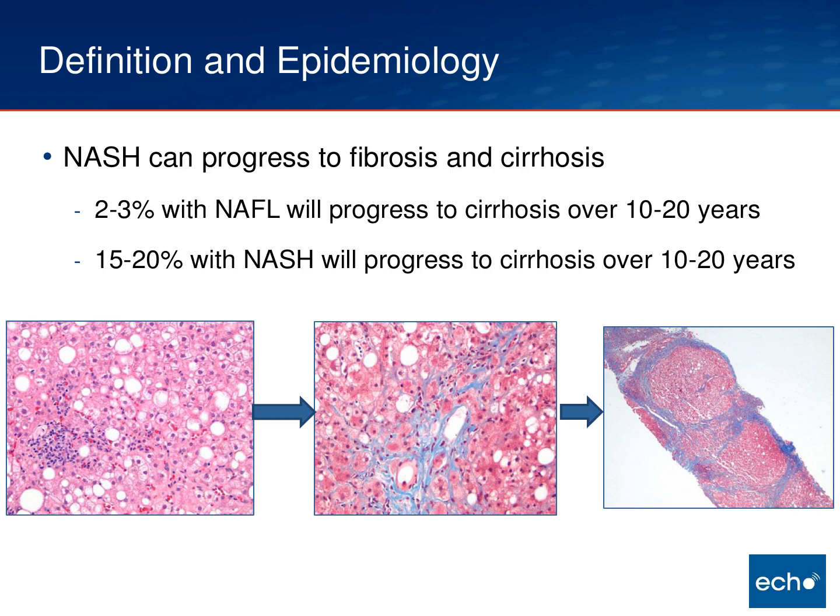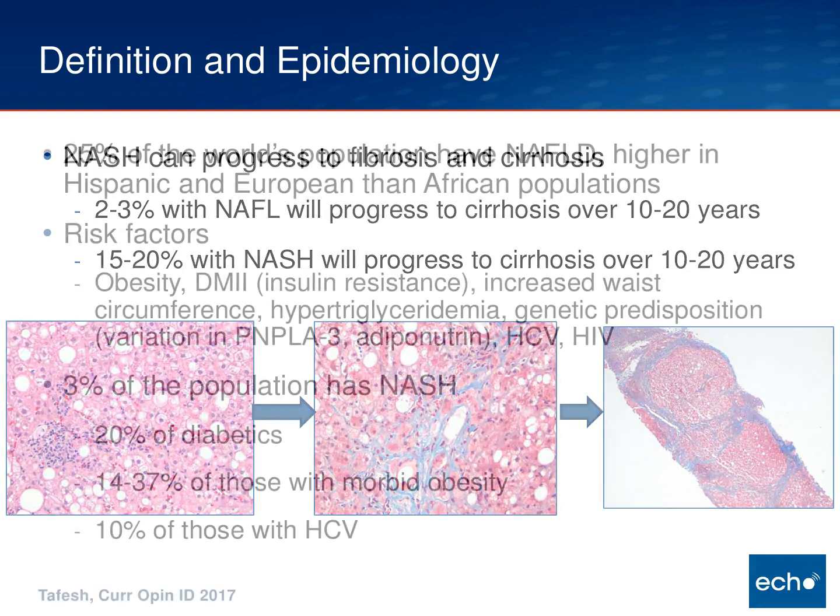But 15 to 20 percent of people with NASH will progress to cirrhosis over 10 to 20 years. Here is a picture of somebody with NASH, and this is a picture of somebody who has NASH and is starting to fibrose — those are the reticular blue fibers throughout the liver. And then this is a core biopsy of somebody that has cirrhosis.